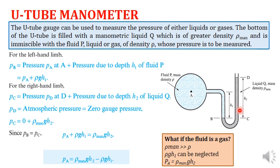Depending on whether the fluid pressure is more or less than the manometric fluid pressure, the heights of the columns will fluctuate. You will observe fluctuation in both h₁ and h₂, and this mechanism determines the pressure. To find pressure at point B, a horizontal section is cut through the bottom level of the fluid — just at the start of the manometric fluid — at the intersection point.